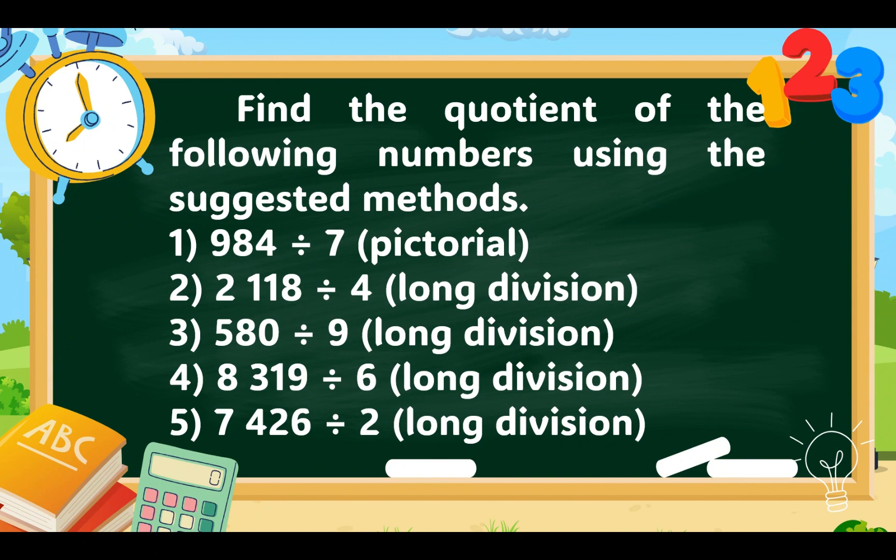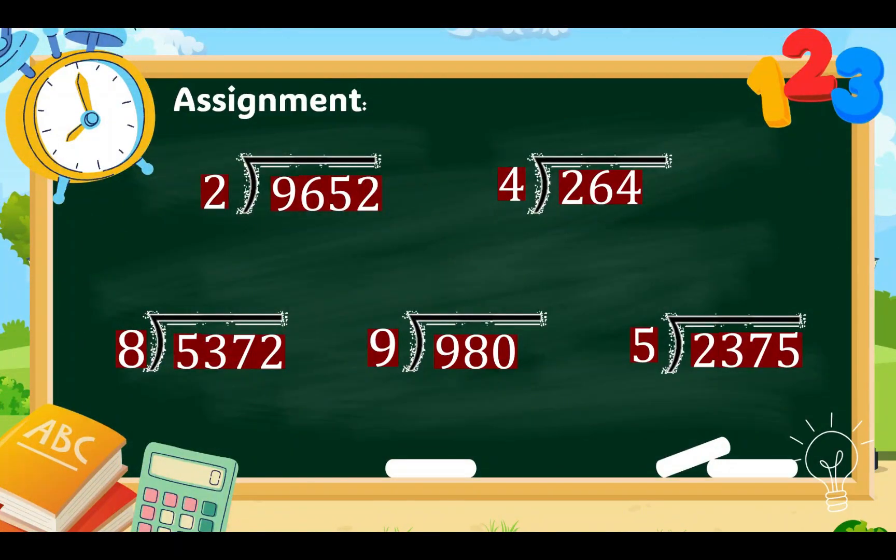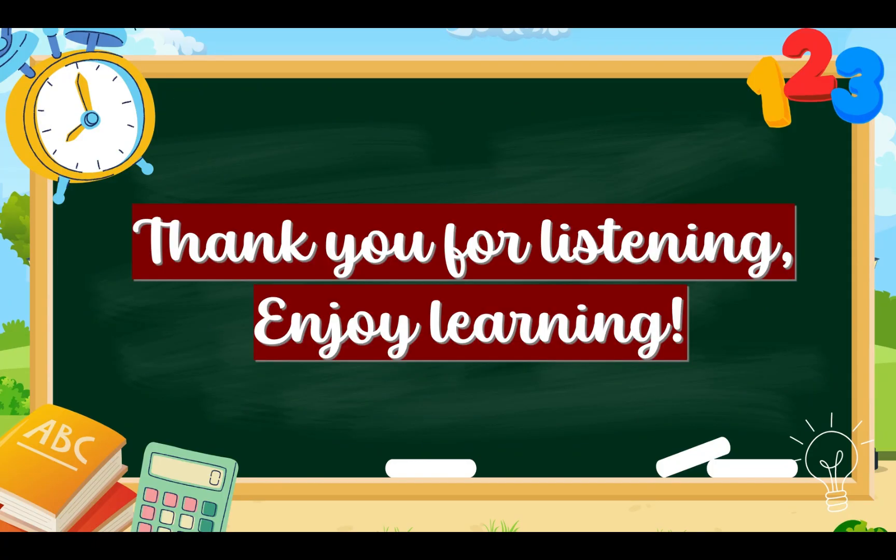Now, it's your turn to find a quotient of the following numbers using these suggested methods. For number 1, you have to use pictorial representation. And, for numbers 2-5, use long division. And, for your assignment, answer the following. Once again, thank you for listening and enjoy learning. Have a good day.